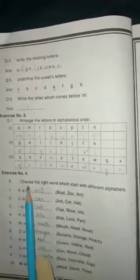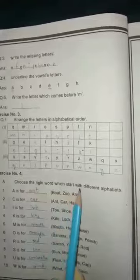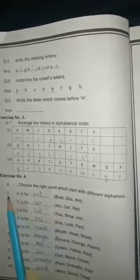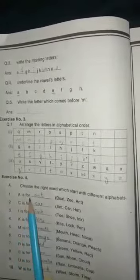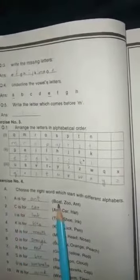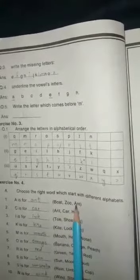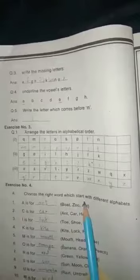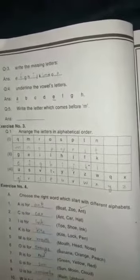Exercise number 4: Choose the right word which starts with different alphabets. Question number 1 is A is for. You have three options: Boat, Zoo, and Art. So you have to select which word starts from A. So you tick here Art and you write here Art. According to this, you have to complete.